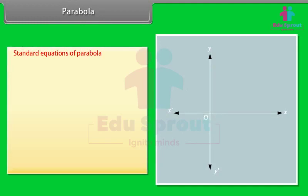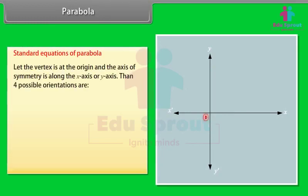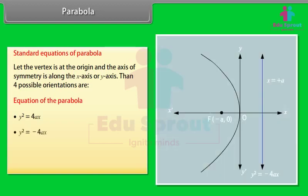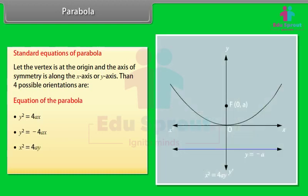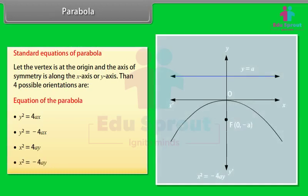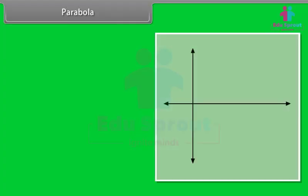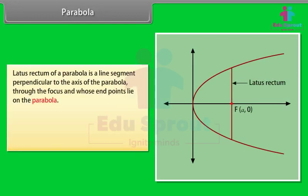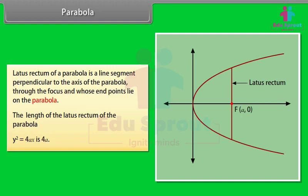Standard equations of parabola: let the vertex be at the origin and the axis of symmetry along the x-axis or y-axis. Then four possible orientations are: y² = 4ax, y² = −4ax, x² = 4ay, and x² = −4ay. The latus rectum of a parabola is a line segment perpendicular to the axis of the parabola through the focus, whose endpoints lie on the parabola. The length of the latus rectum of the parabola y² = 4ax is 4a.